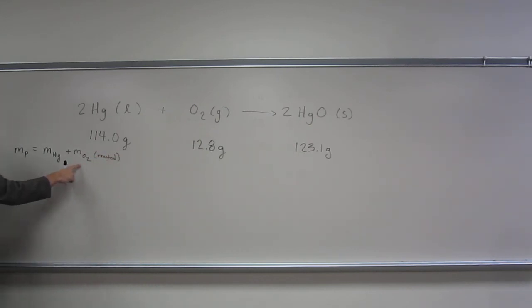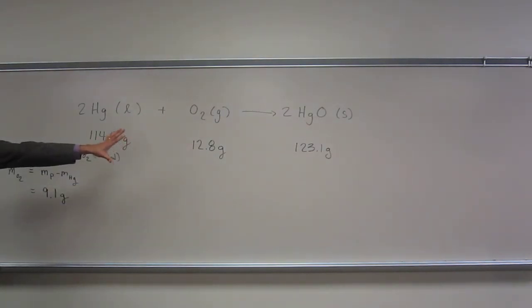If we want to know how much oxygen is left over, what's the mass of oxygen? The mass of product minus the mass of mercury is going to be the mass of oxygen. So, 123.1 minus 114, we get 9.1 grams. So, 9.1 grams is how much oxygen was reactive. Does that make sense?